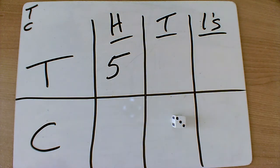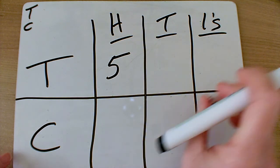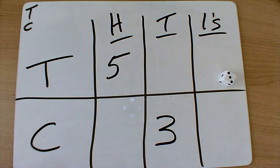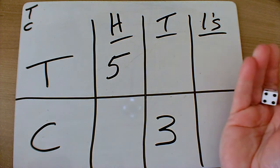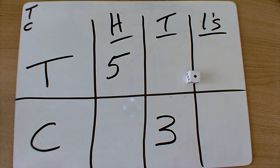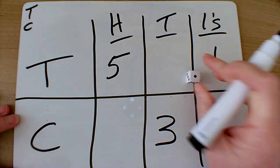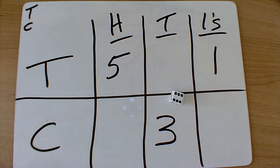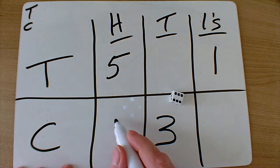Three. I'm going to put my three in my tens column. Roll again for the teacher. One. I'll put the one in the ones column. Six. Now if I was a child, I'd be putting the six in the hundreds